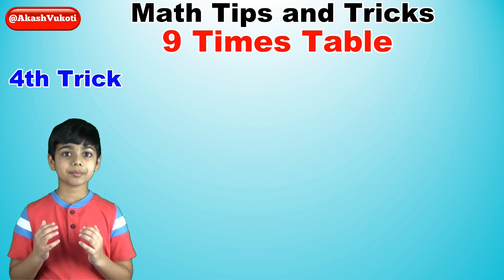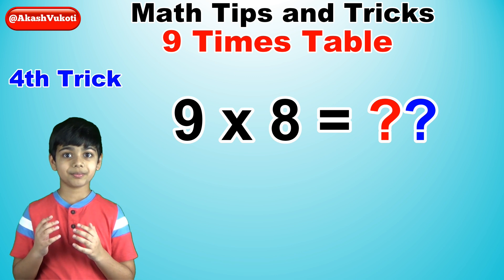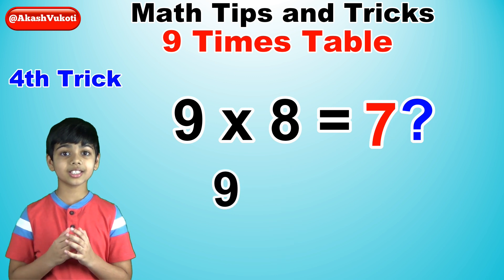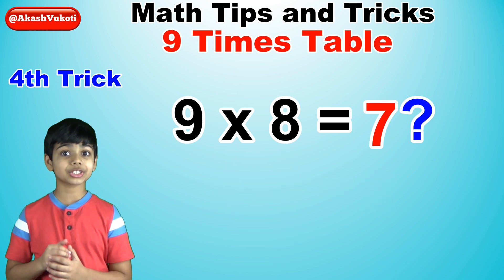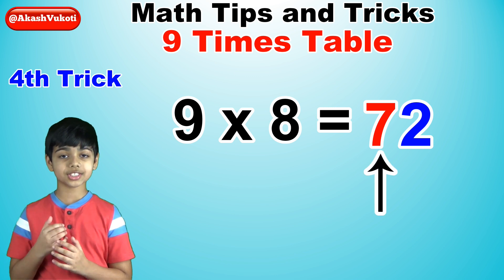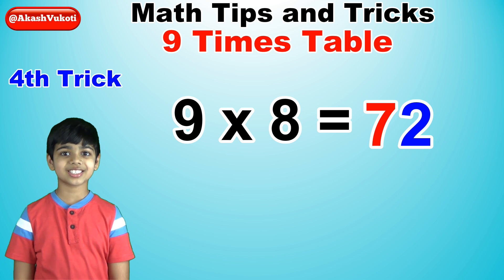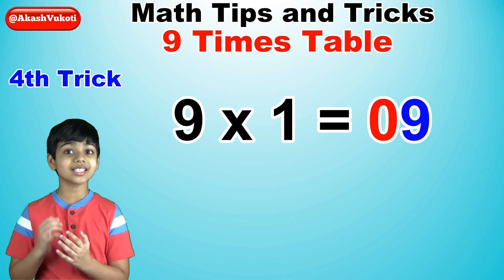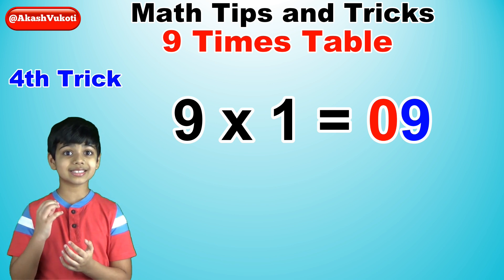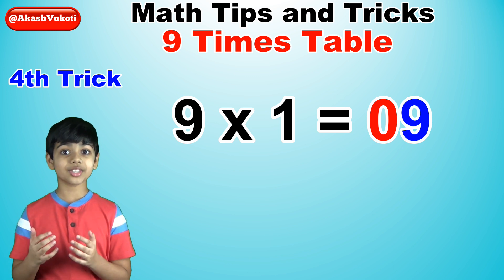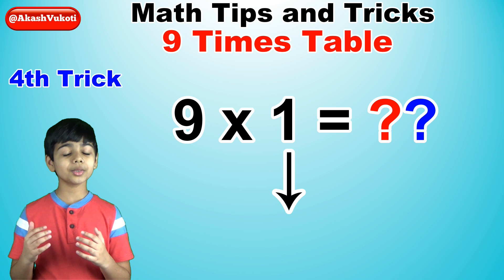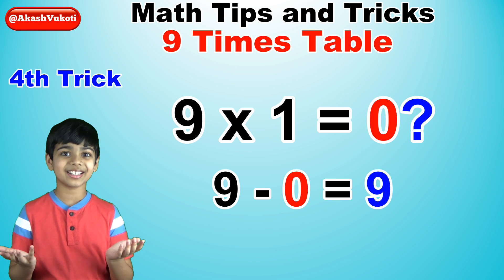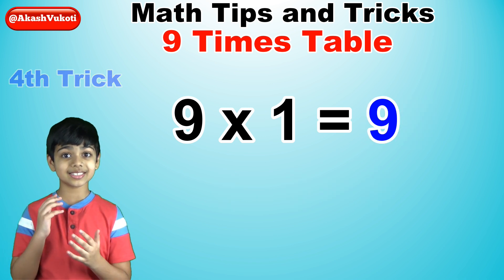Let's take another example: 9 times 8. The number before 8 is 7, which is the first digit. 9 minus 7 is 2, which is the last digit. The answer is 72. 9 times 1 is 9, and we all know that because any number times 1 is that number. But did you know it applies here too? The number before 1 is 0, and 9 minus 0 is 9. So 0, 9 — or just 9 — is the answer.